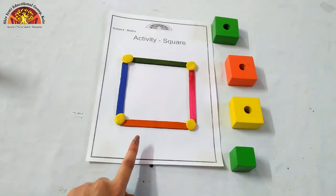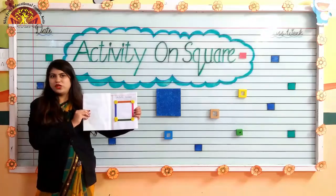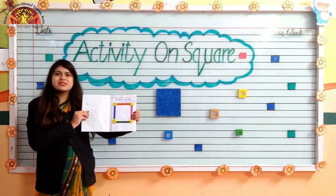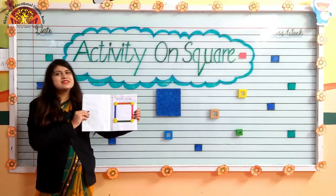See kids, our activity is done. Kids, which shape is this? This is square.